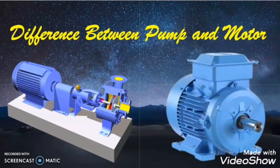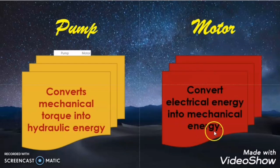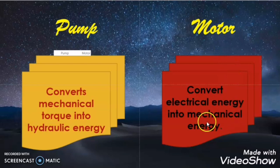The first difference between the pump and motor is that pump converts mechanical energy into hydraulic energy, and the motor converts electrical energy into mechanical energy. Pump takes mechanical energy as an input and produces hydraulic energy. But in case of motor, the motor takes electrical energy as an input and converts it to mechanical energy as an output.